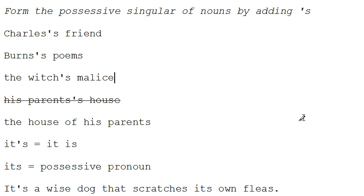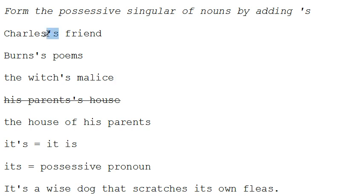An example of a rule of usage is the rule which states that we should form the possessive singular of nouns by adding apostrophe s. Now what this means is Charles is an example of a noun — it's actually a proper noun, but it's an example of a noun. In order to indicate possession, we could either say the friend of Charles, or we can create a possessive singular of the noun by adding apostrophe s.